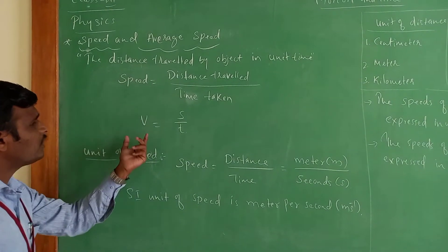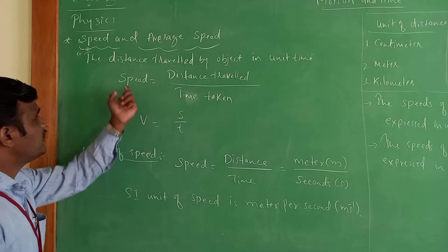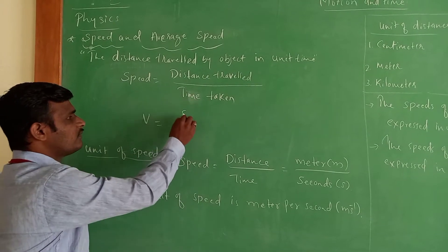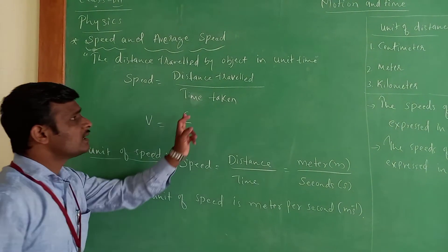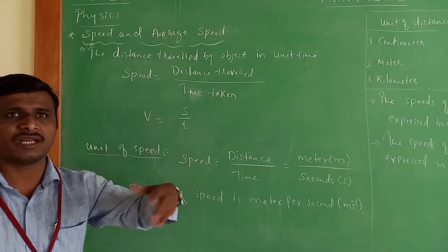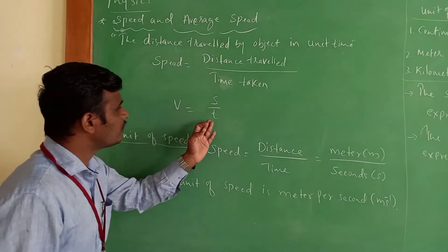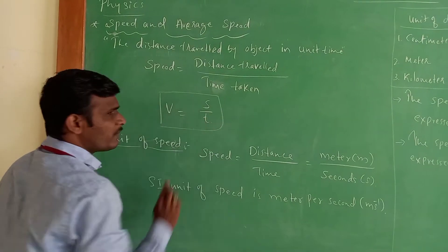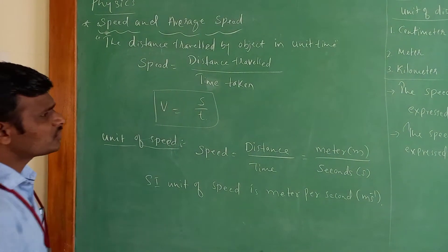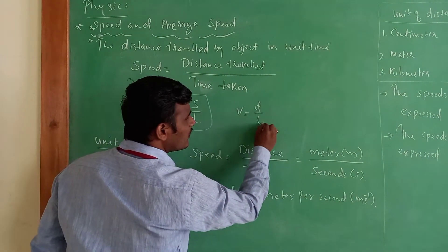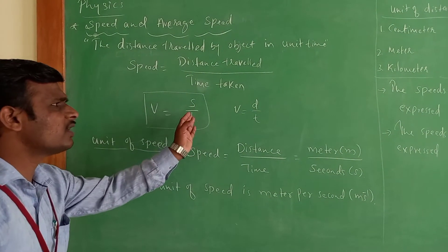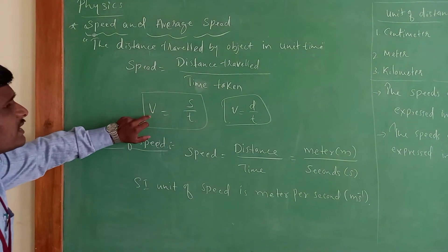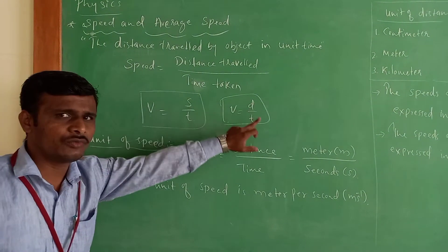Speed is usually denoted by the term V. The distance travelled or covered is denoted by S (or D). The time taken is denoted by the small letter T. So the formula for speed is: V is equal to S by T. We can also write it as speed equals D by T — both S and D represent distance.